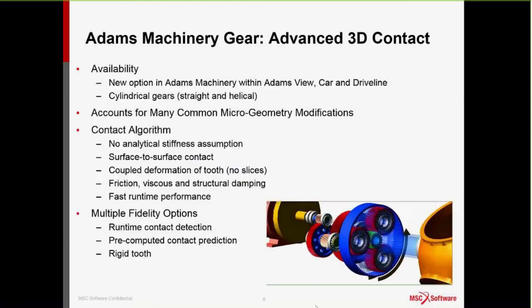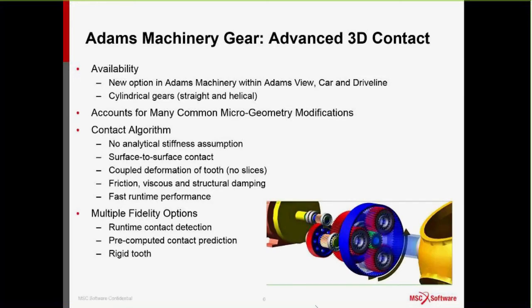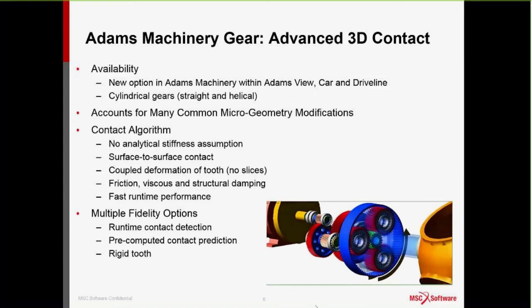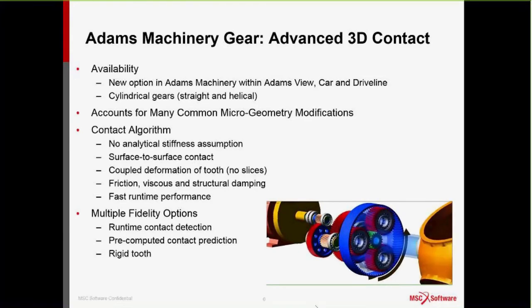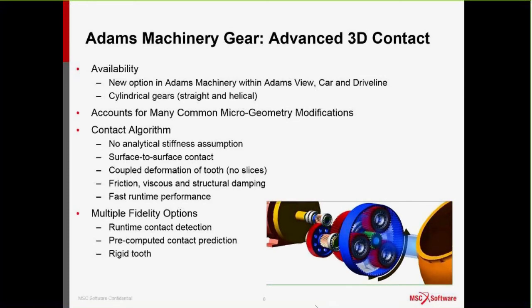This is available through Adams Machinery Gears embedded in Adams View, as well as Car and Driveline. Currently it functions for cylindrical gears only — straight and helical — with plans to extend to bevel gears and hypoids in the future. It can account for many common microgeometry modifications. The contact algorithm is not an analytical stiffness assumption; there's a numerical basis for this. It accounts for surface-to-surface contact and coupled deformation of the teeth. Friction, viscous, and structural damping — all types of energy loss terms — are available.